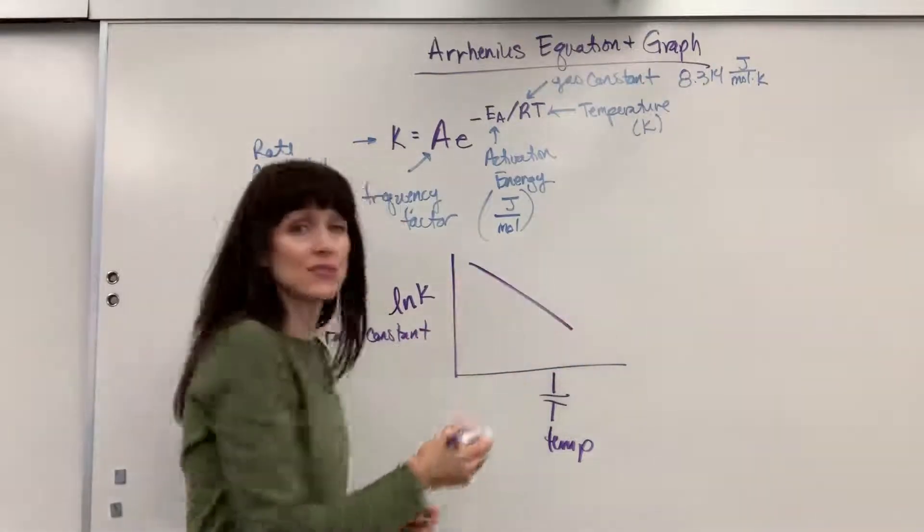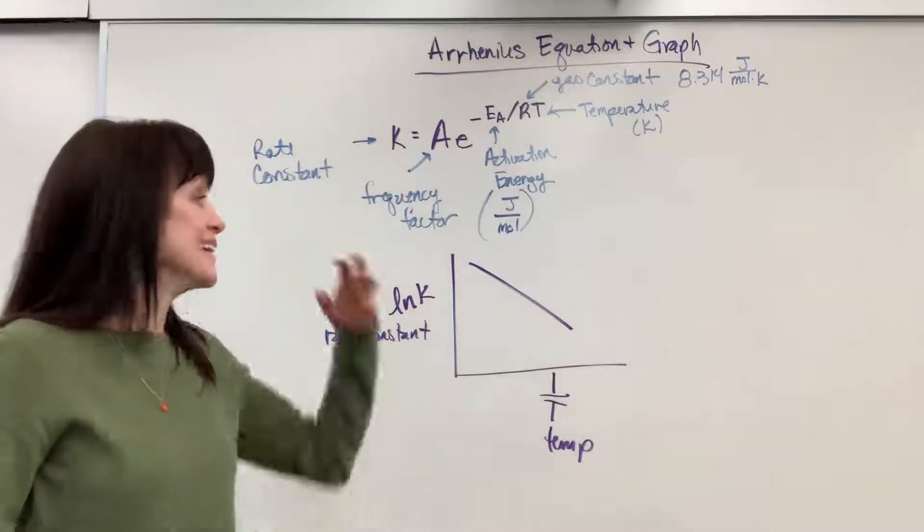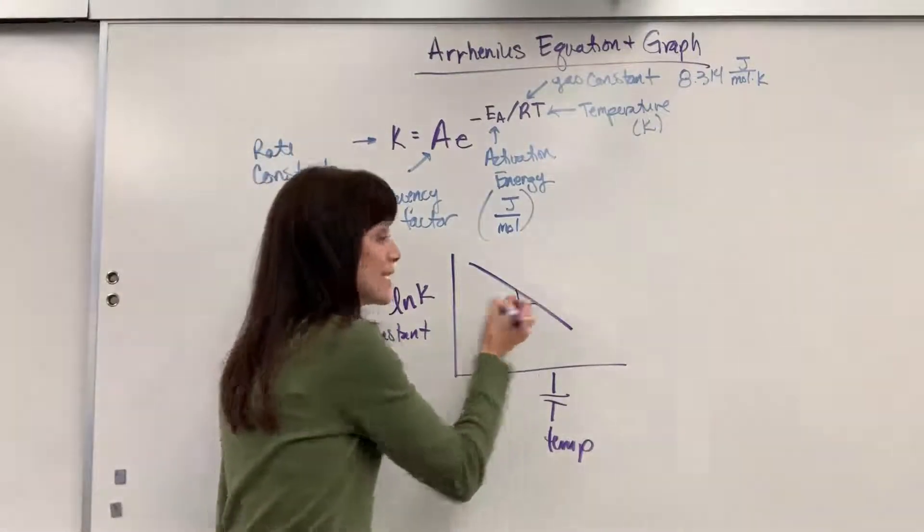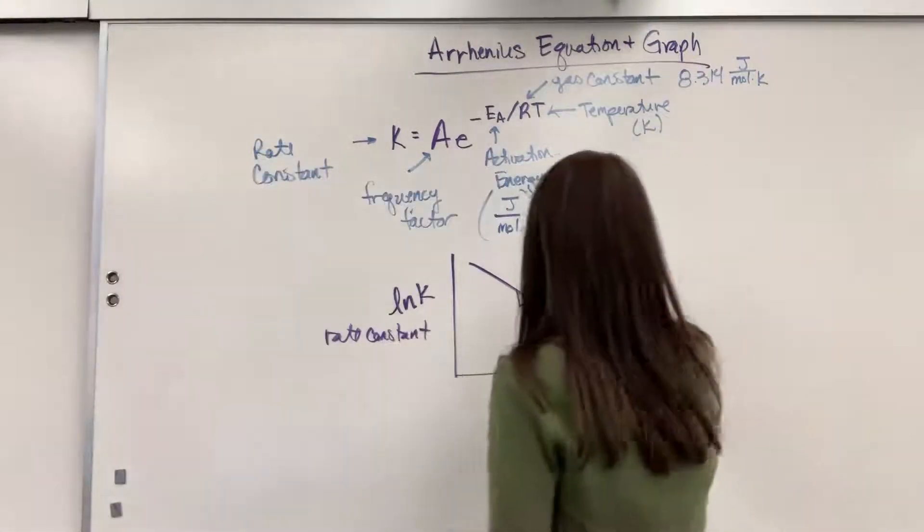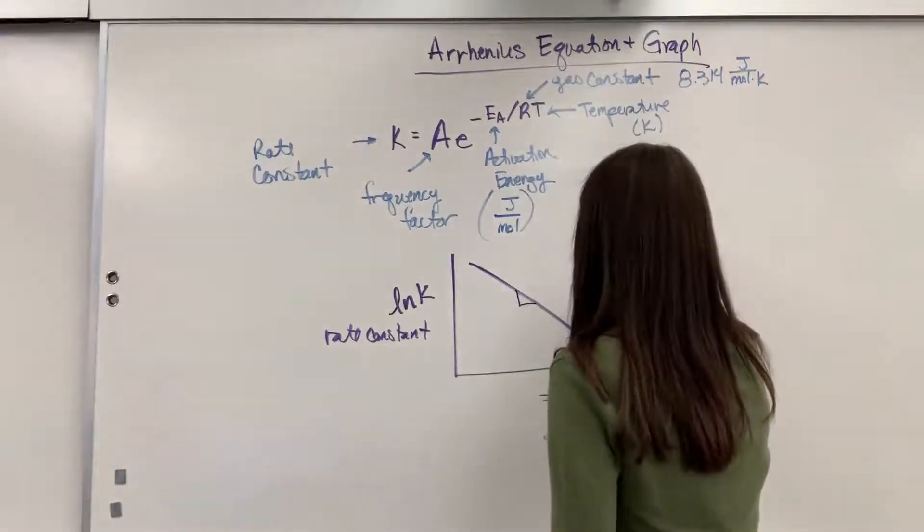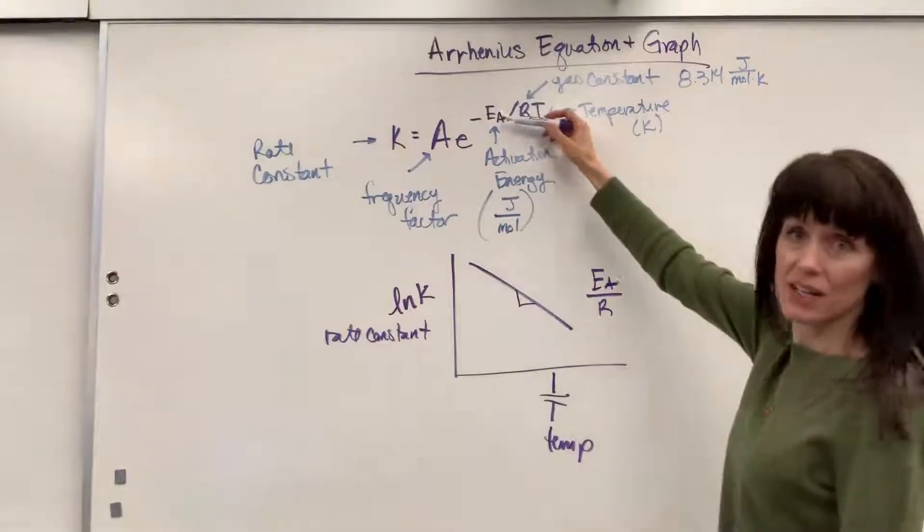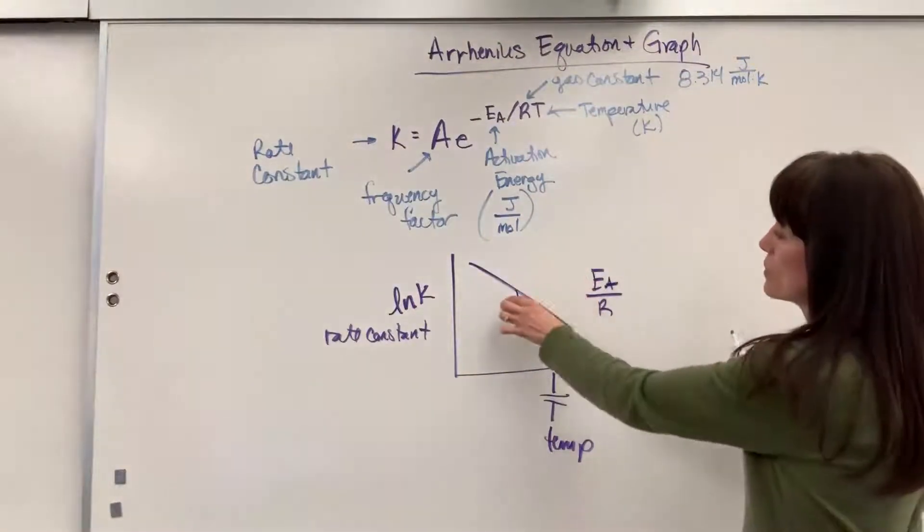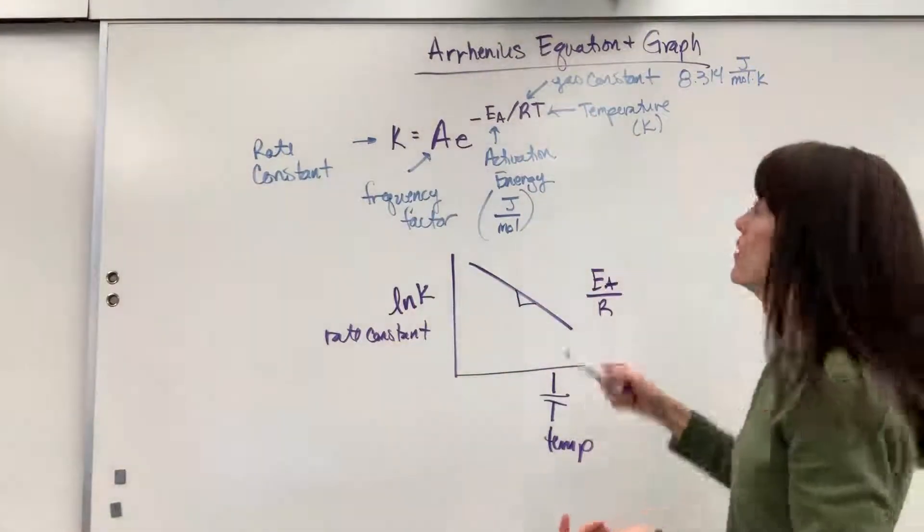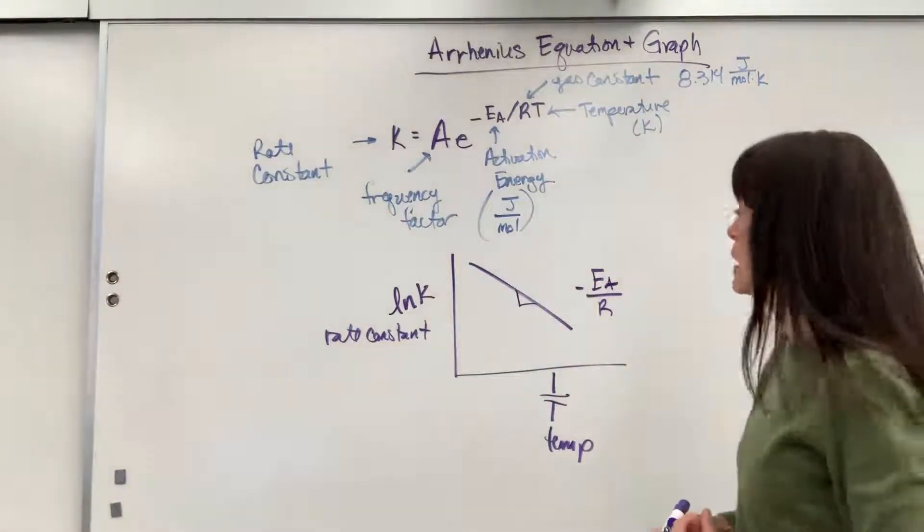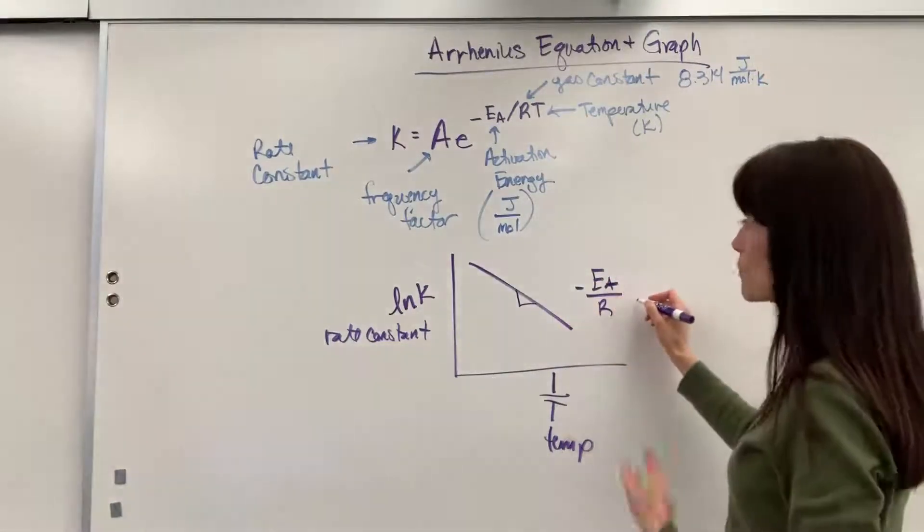It is a negative linear slope, and here is the power of this graph. The slope right here is Ea over R, Ea over R. Now, notice it's a negative right here, so that when you do this slope, it will come out negative. Multiply it by the negative, and you will get a positive value. So, this right here, pretty cool.